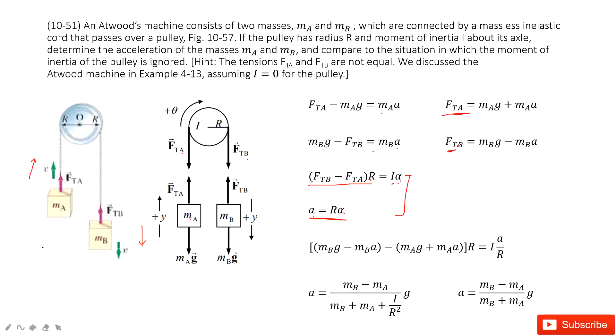Now, we input FTA and FTB inside in this function. And then, we input it there times R, and alpha can be written as acceleration divided by R.